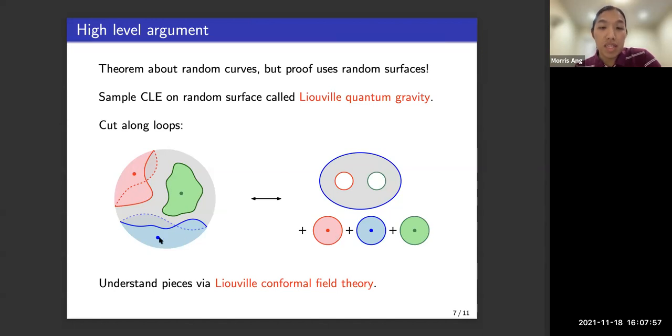And each of the pieces in this picture here can be understood via something called Liouville conformal field theory. And consequently, we can then understand the loops better. And that gives our main result.